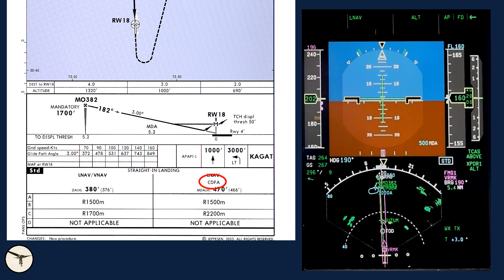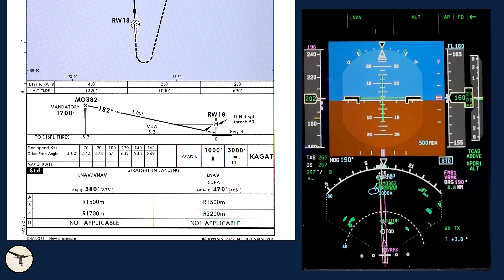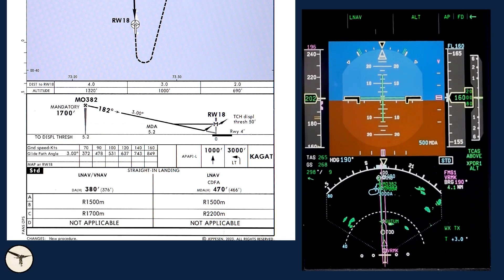CDFA means continuous descent final approach. That means we shall not dive down to minima, level off, and fly to the missed approach point while looking out. Instead, we will follow a 3 degree profile to minima, and if not able to continue visually, go around. This is done as procedure even when CDFA is not printed on the approach chart.